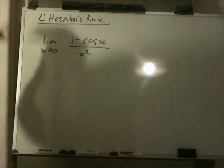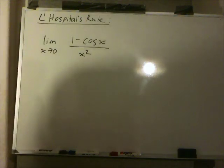All right, we're given the following limit. The limit as x goes to 0 of 1 minus cosine x over x squared, and we're asked to evaluate it.